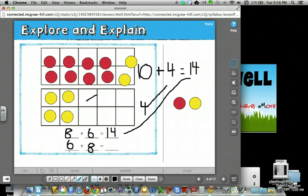Now there's another number sentence that's 6 plus 8. Guess what? It's just the flip-flop of 8 plus 6. So this is automatically 14. Yay! I just made 10 to find the sum.